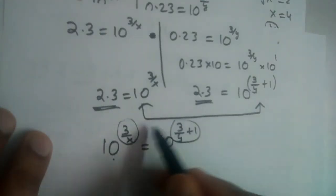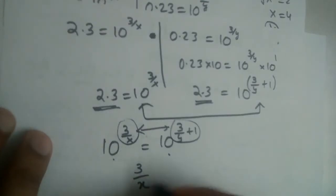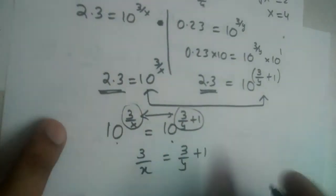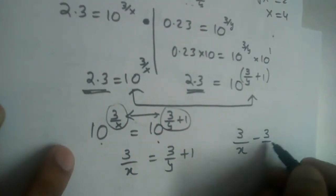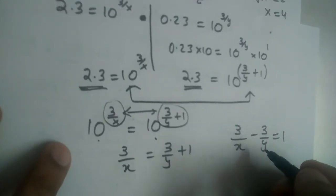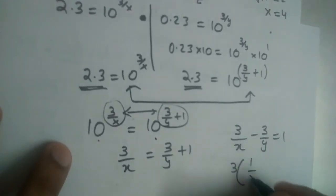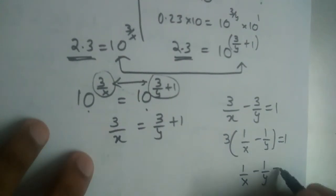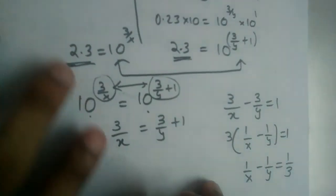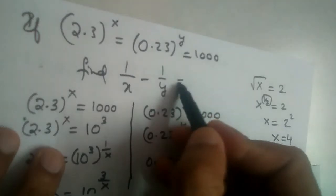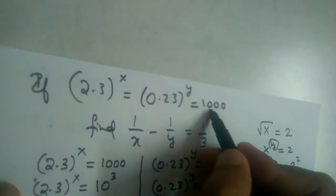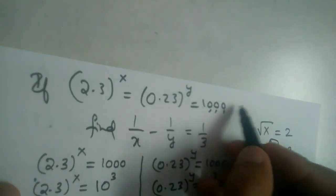Since the bases are equal, the powers must be equal: 3/x equals 3/y plus 1. Sending 3/y to the other side gives 3/x minus 3/y equals 1. Taking 3 common: 3 times (1/x minus 1/y) equals 1, so 1/x minus 1/y equals 1/3. That is the answer. The 3 came from writing 1000 as 10 cubed.